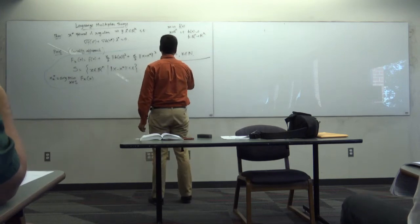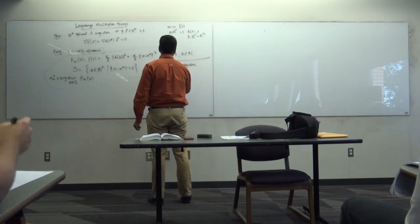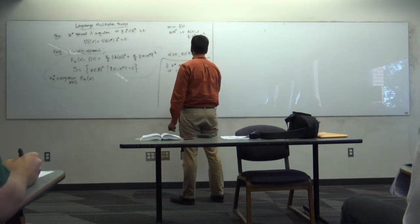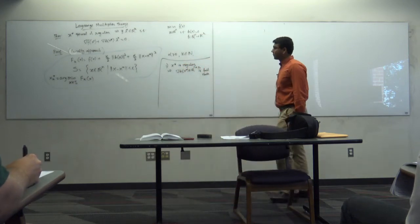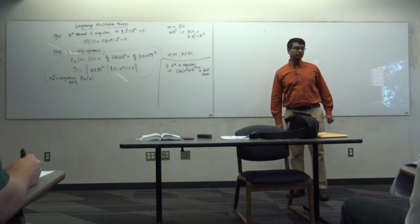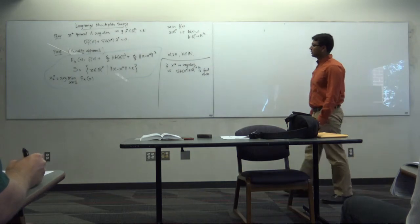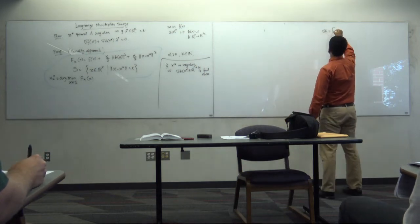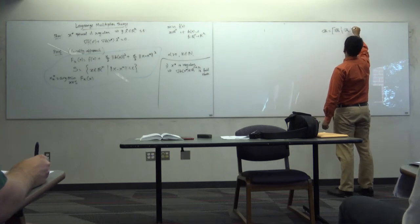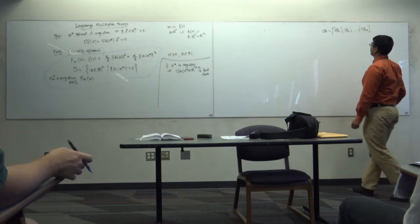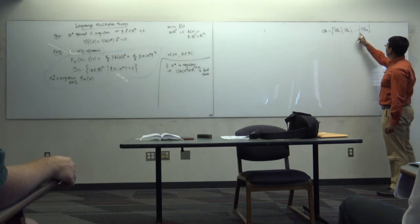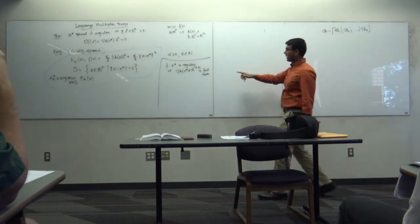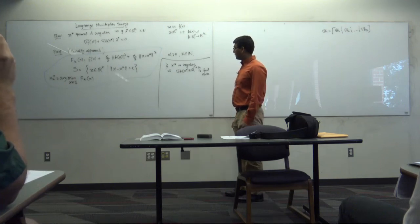The first thing we know is x* is regular, which implies that ∇h(x*) in ℝⁿ×ʳ is full rank. The gradient of H is [∇h₁, ∇h₂, ..., ∇hᵣ], and these gradients are all linearly independent at x*, which is equivalent to saying this matrix has rank r.